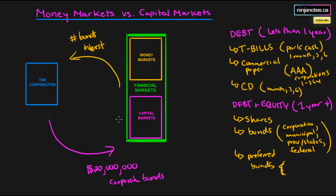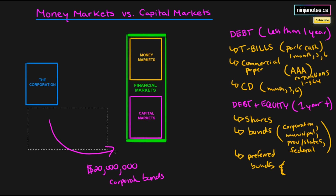Those are different types of investments available through the capital markets and the money markets. Always remember: money markets are for maturities of less than one year, capital markets are for maturities greater than one year, and capital markets include equity in addition to debt. We'll be talking about primary markets and secondary markets in the next tutorial — thanks for watching.